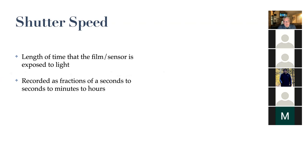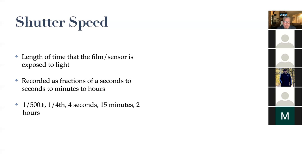Shutter speed is recorded as fractions of a second, to minutes, to hours. In this class we're going to do fractions of a second, maybe a second, but not minutes or hours. So you have terms like 1/500th of a second, 1/4 of a second, 4 seconds, 15 minutes, 2 hours. On your cameras, when you're looking through the viewfinder or on the screen, if you see quotation marks next to a number - like 30 with a quotation mark - that's probably not the best thing. That probably means you're in a really low light situation, or you might have the lens cap on.